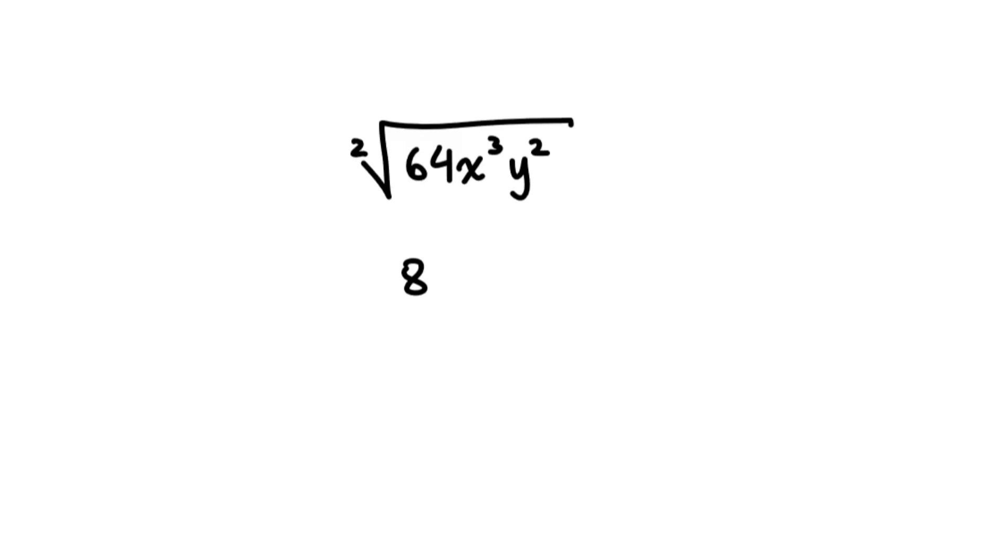Then when we convert the radical form of an expression into an exponential form, we might have to create the rational exponent. So x will be x to the power of 3 over 2. The index of the radical goes into the denominator. And y will be 2 over 2. So then here the final simplified expression will be 8x to the power of 3 over 2, y.